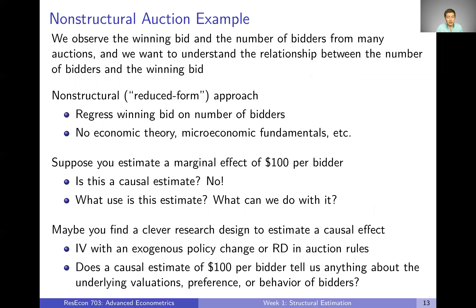Let's look at a couple of quick examples to fix some ideas. Starting with a non-structural model in the context of auctions: suppose we observe the winning bid and the number of bidders from many auctions and want to understand the relationship between them. In a non-structural or reduced-form approach, we could just regress the winning bid on the number of bidders. That gives us a correlation between those two variables, but we're not directly estimating an actual economic model — not estimating valuations, risk preferences, or anything like that.